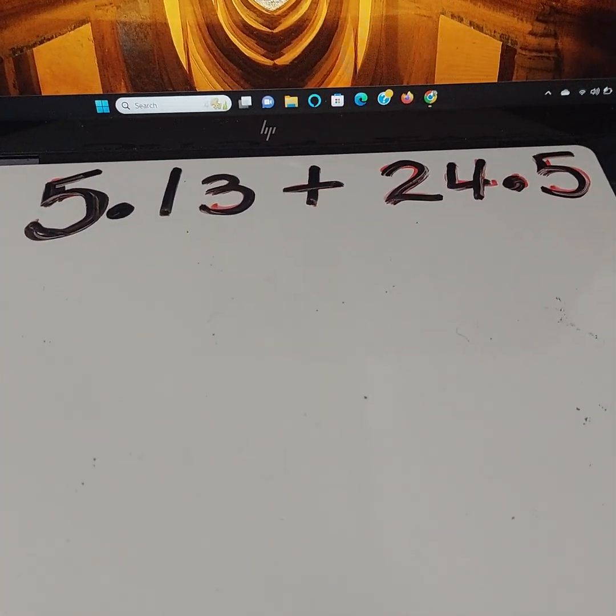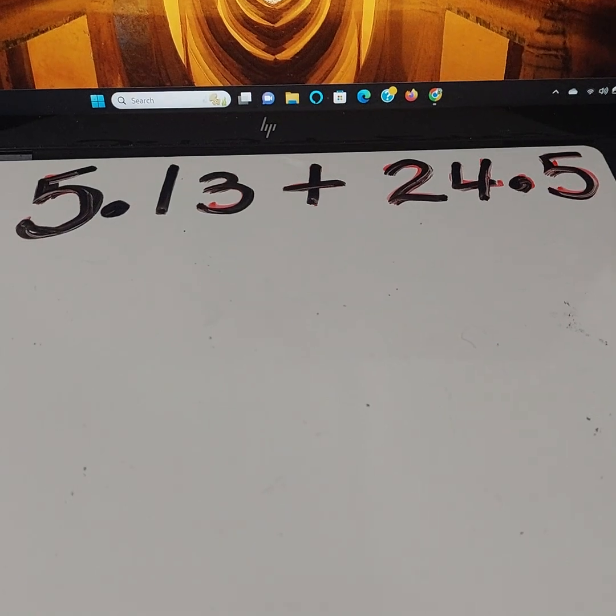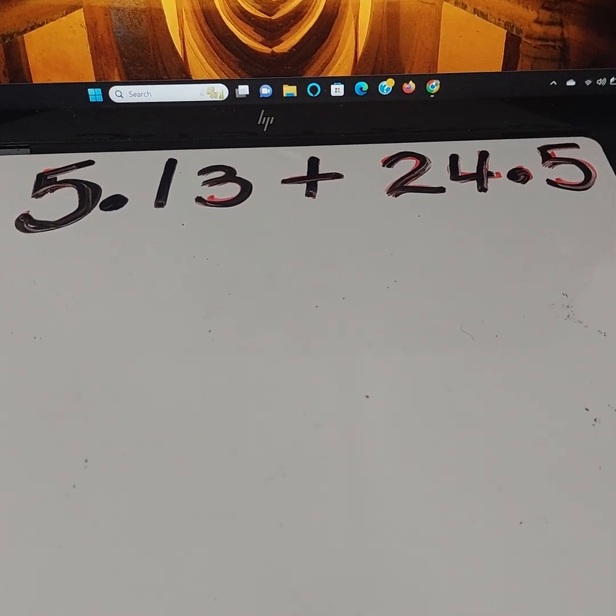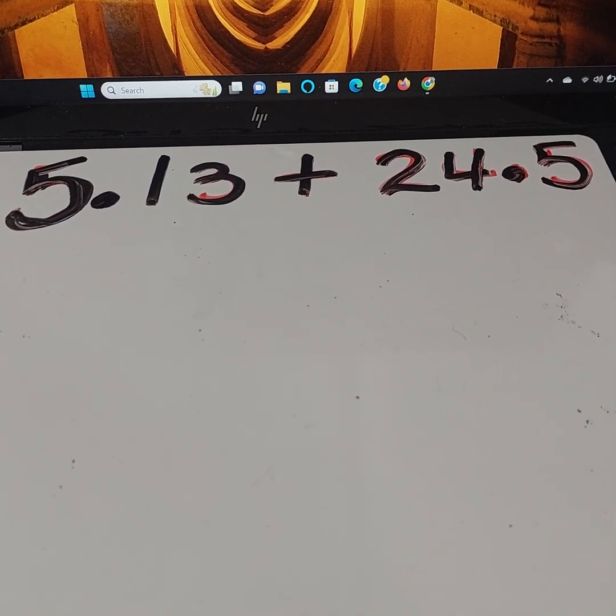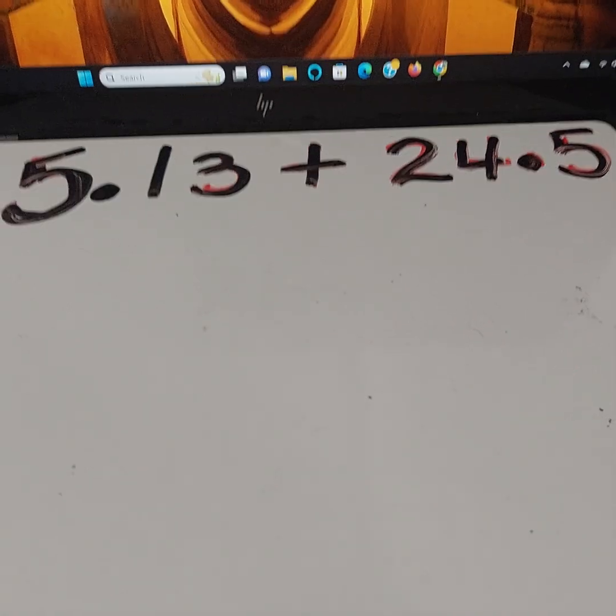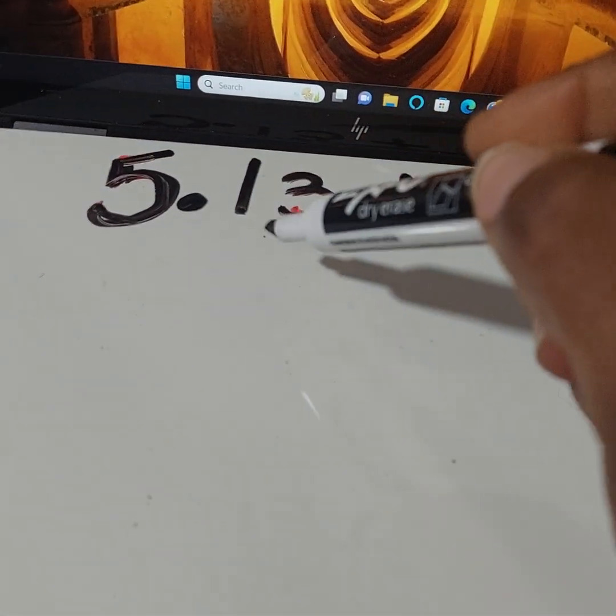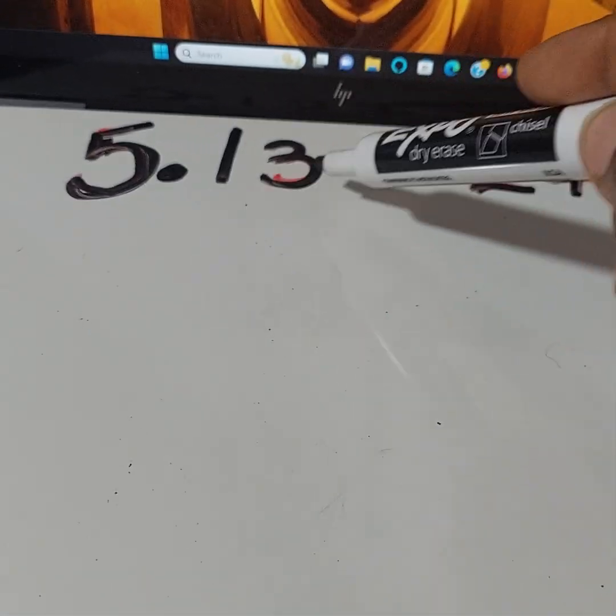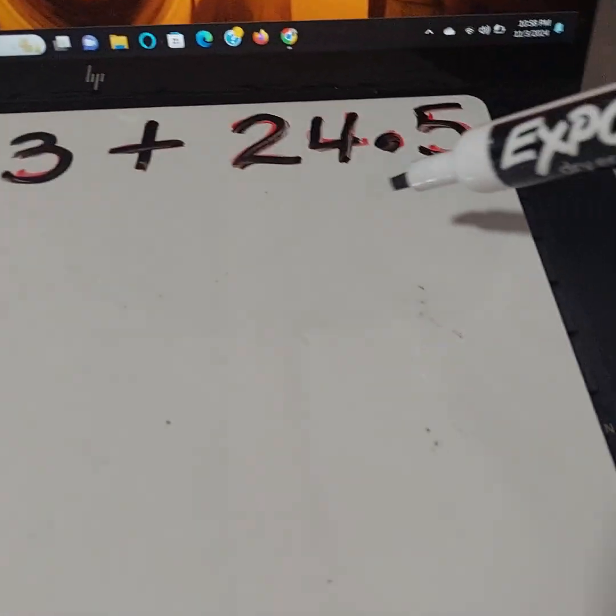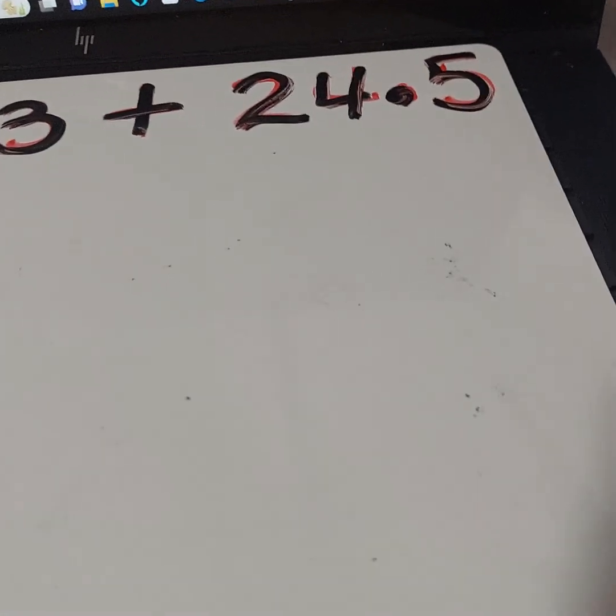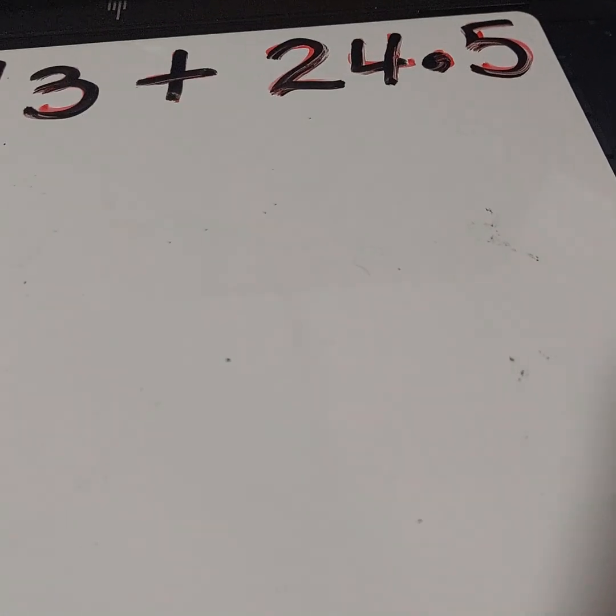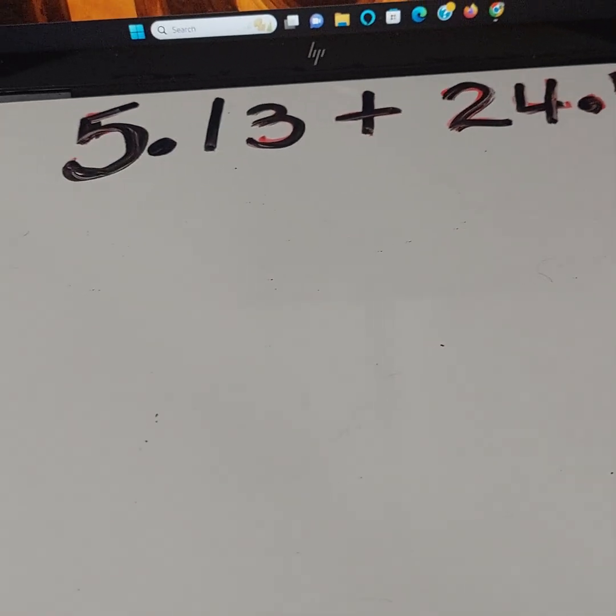So let me show you some strategies to make sure that you're always correct 100% of the time. We're going to start with 5.13 (five and thirteen hundredths) - so you have five wholes and thirteen hundredths. Over here you have 24.5 (24 wholes and five tenths). We're going to go ahead and place our numbers.